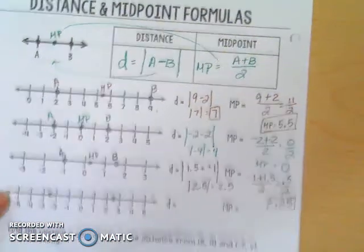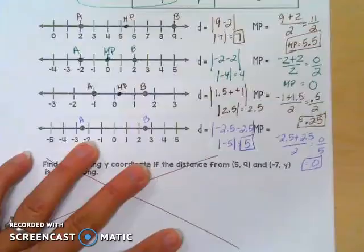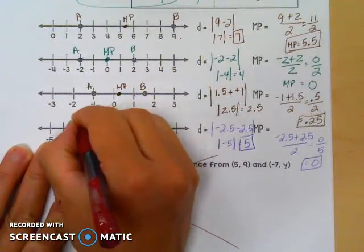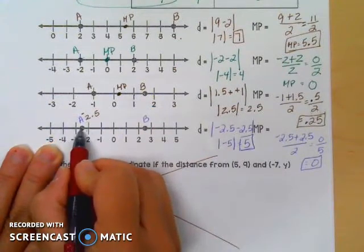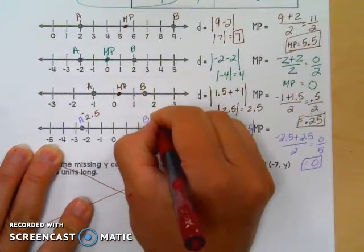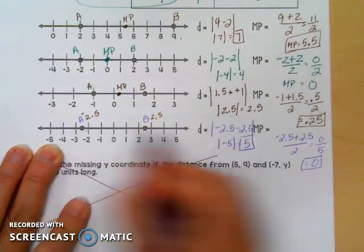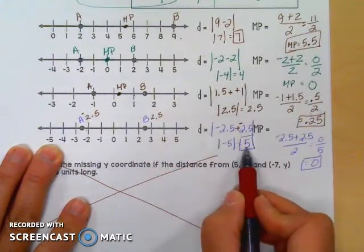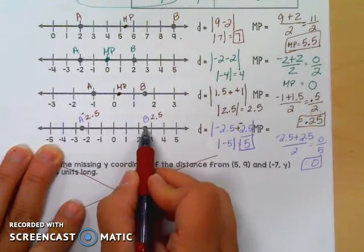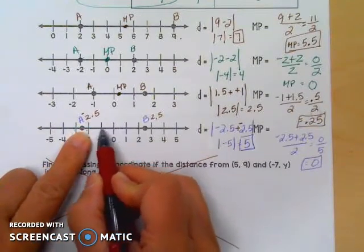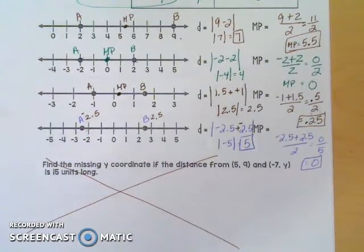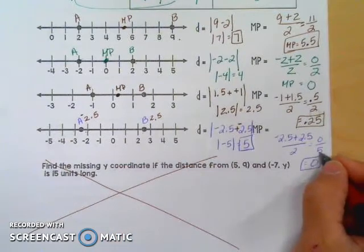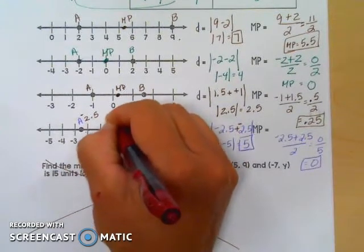Take a minute and see if you can do this last one on your own. With A at negative 2.5 and B at positive 2.5: subtracting negative 2.5 minus 2.5 becomes plus a negative, so two negatives add up to negative 5, but the absolute value is positive 5. That's the distance — there's a half and a half and then four full spaces, making positive 5. For the midpoint: adding the endpoints and dividing by 2 gives 0 over 2, which is just 0, and the midpoint is right there at 0.